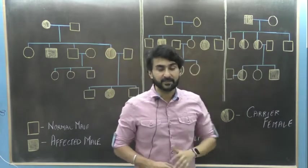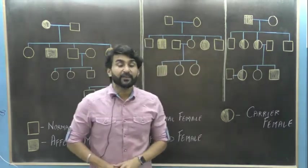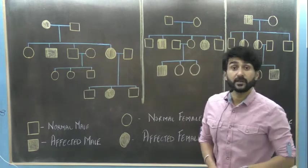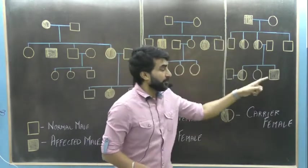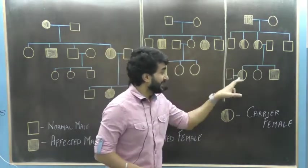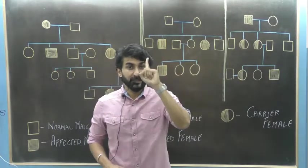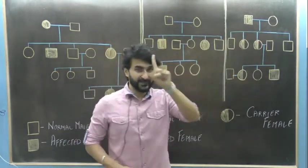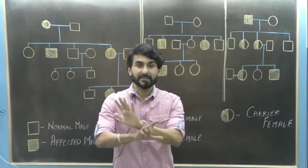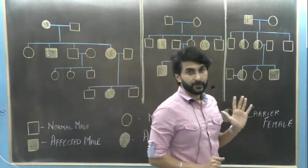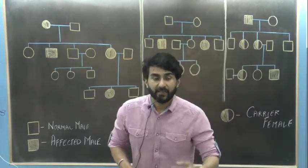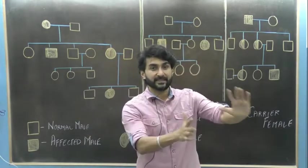This is called crisscross inheritance. So if you observe crisscross inheritance in the pedigree chart — males being more the sufferers of the disorder, females generally carriers — if you see more males affected, females generally carriers, and crisscross inheritance, it's a sex chromosomal disorder. That is the first step: when you have a pedigree chart in front of you, how do you identify whether it is an autosomal disorder or a sex chromosomal disorder.